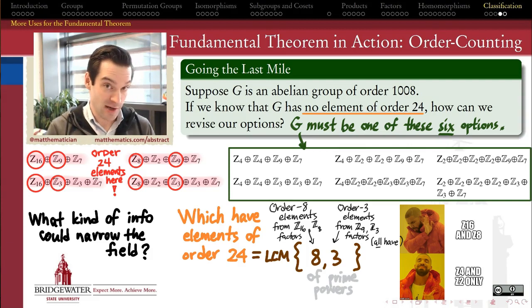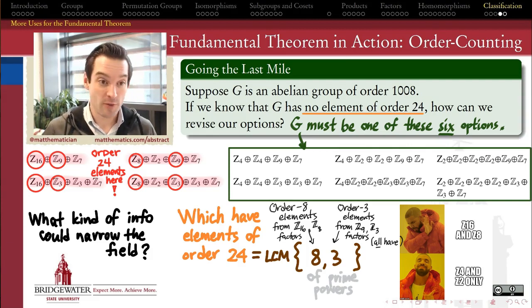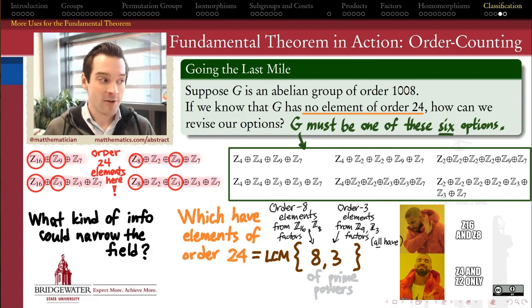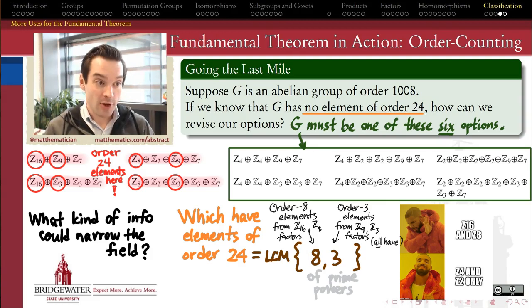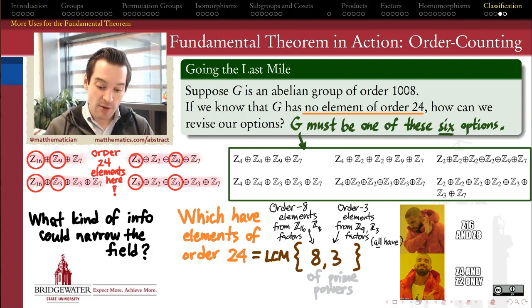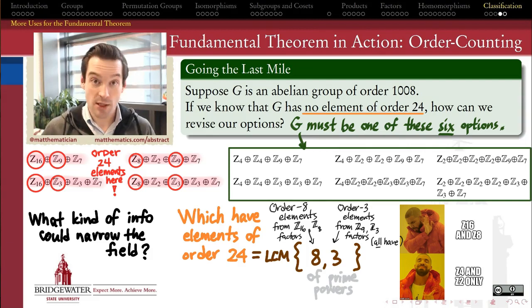Of course, if we wanted to narrow that further, we would need some more information still. But this gives you a flavor for how we can start from the fundamental theorem, which prescribes the whole universe, and then shrink that universe by using additional information that we might know about our group.